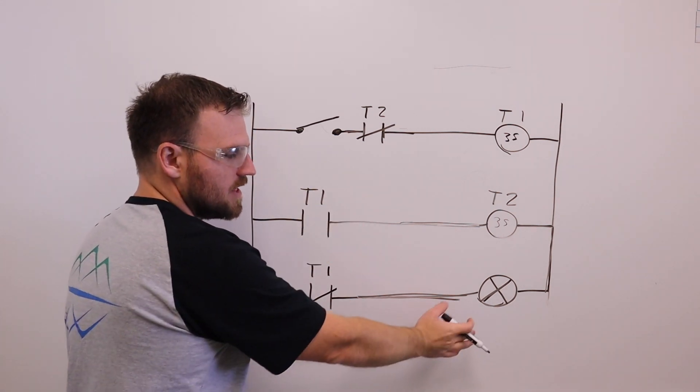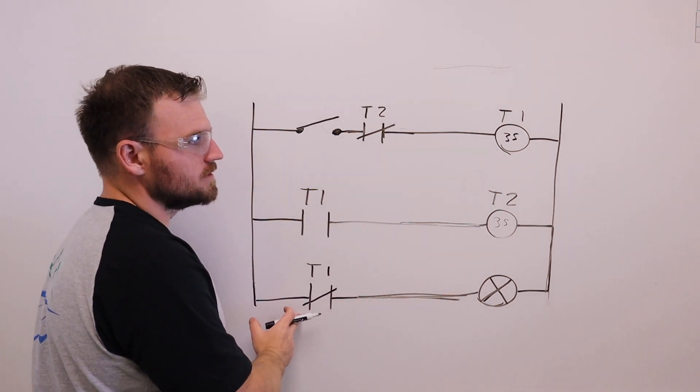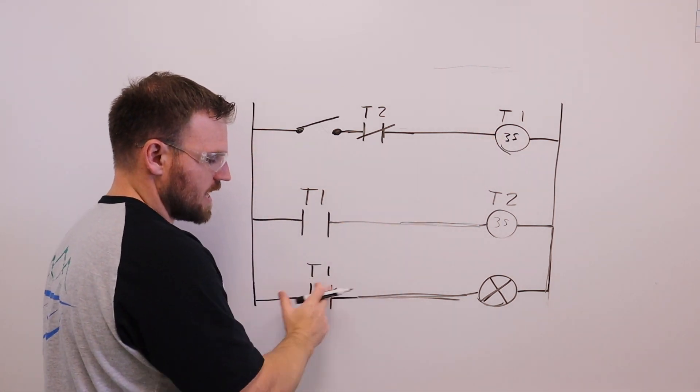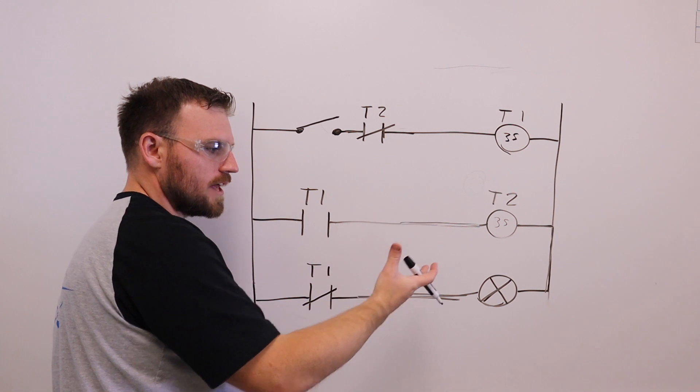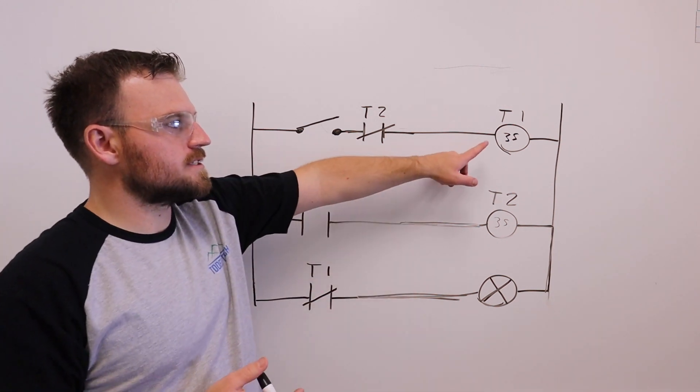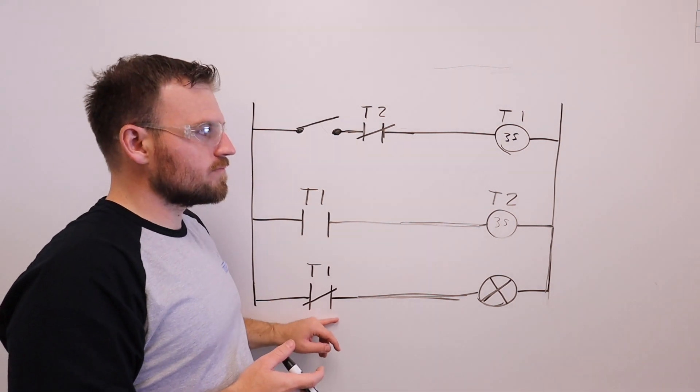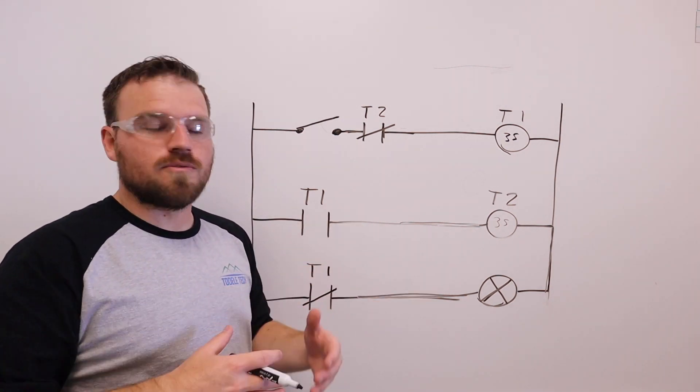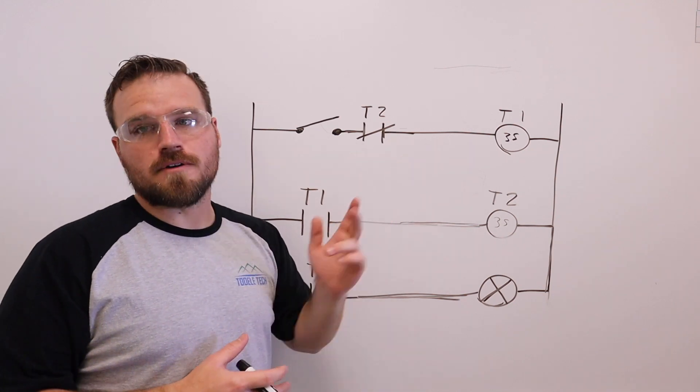Now, I've connected the light to T1. So every time T1 comes on, it's going to open this contact, turning off the light. So the light will normally be on. So what I've really got set up is three seconds it's going to be on, and then three seconds it's going to be off. We're giving a timer for on and a timer for off.